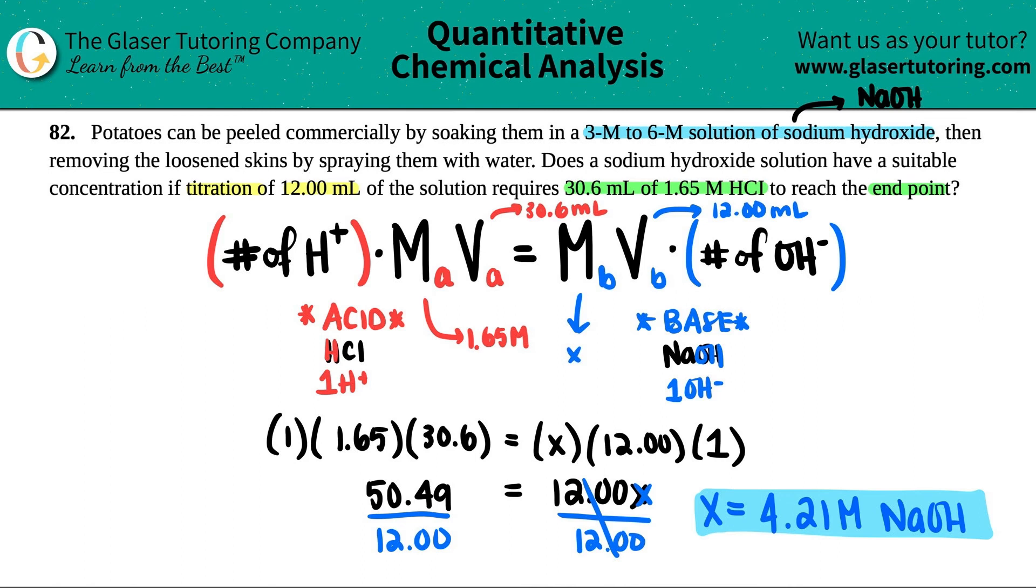And they're saying that when these potatoes are peeled commercially, you soak them in roughly 3 to 6 molarity solution, right? Does a sodium hydroxide solution have that suitable concentration? Is this between 3 and 6? Yeah, 4 is in between 3 and 6. So the answer here is yes. Does it have a suitable concentration? You betcha! We got 4.21, that's in between 3 and 6, so yeah, it does have a suitable concentration.